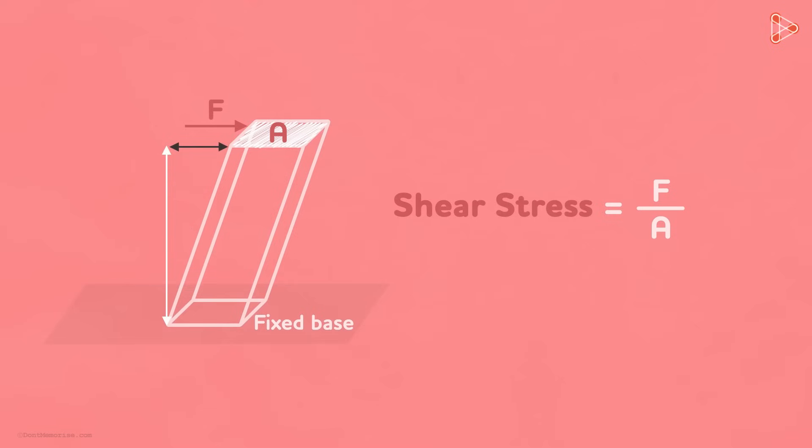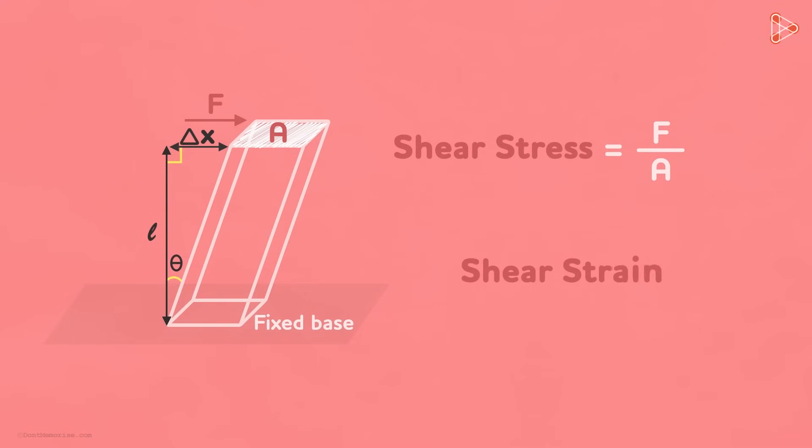Now look at the maximum displacement here. Let's call it Delta X. We know that this length is L. It is perpendicular to this. Also notice that there is an angle formed here. We can call it Theta. With this information in place, let us define what shear strain is.